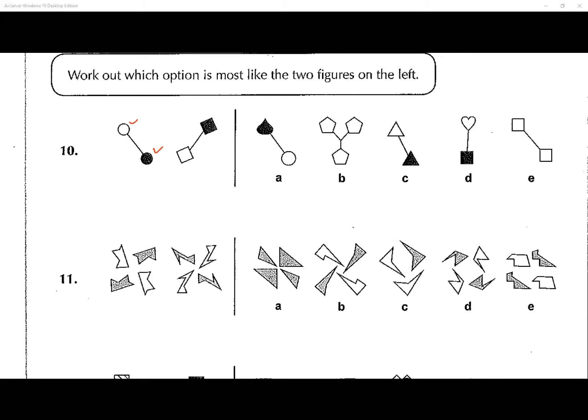Question number ten: work out which option is most like the two figures on the left. We have two items with a connecting rod in the middle — white circle to black circle, white square to black square. It's the same shape on both ends but different colors. One option has different shapes, one has three items instead of two, one has the same color on both ends. C is definitely the answer.